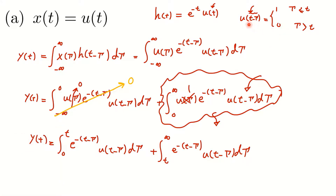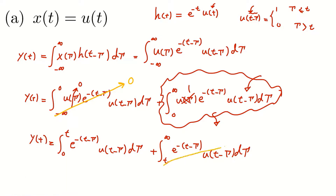From the definition of the unit step signal, u(t - τ) equals zero when τ is in the interval from t to infinity, because in that region τ is larger than t. So the second integral from t to infinity is totally zero. Therefore y(t) only equals the first integral from 0 to t, where u(t - τ) = 1 because τ is smaller than t.